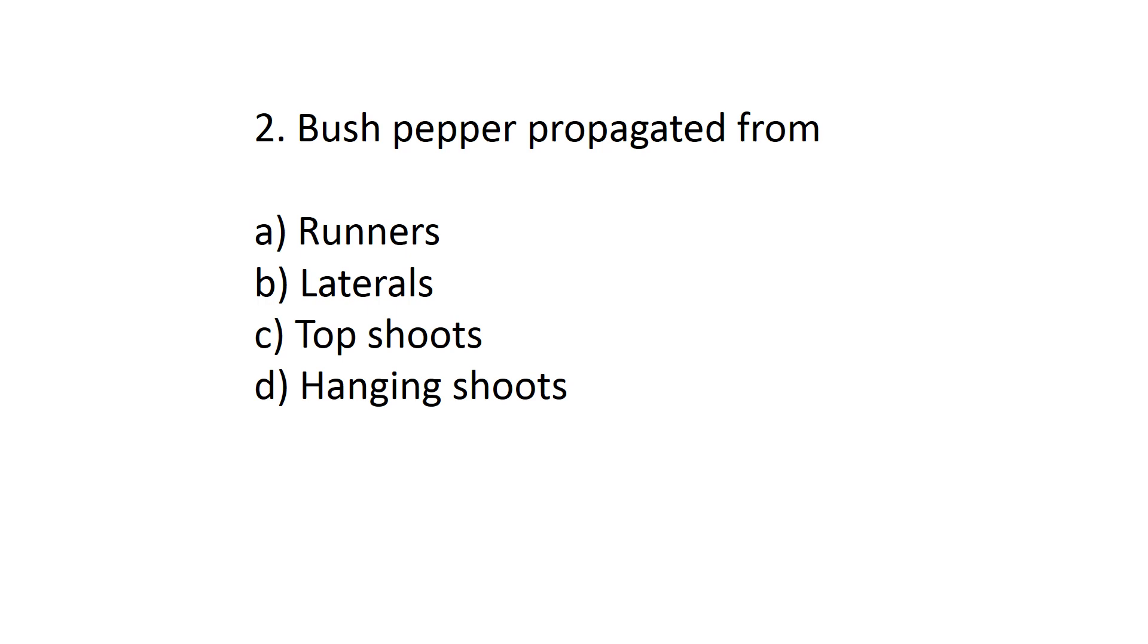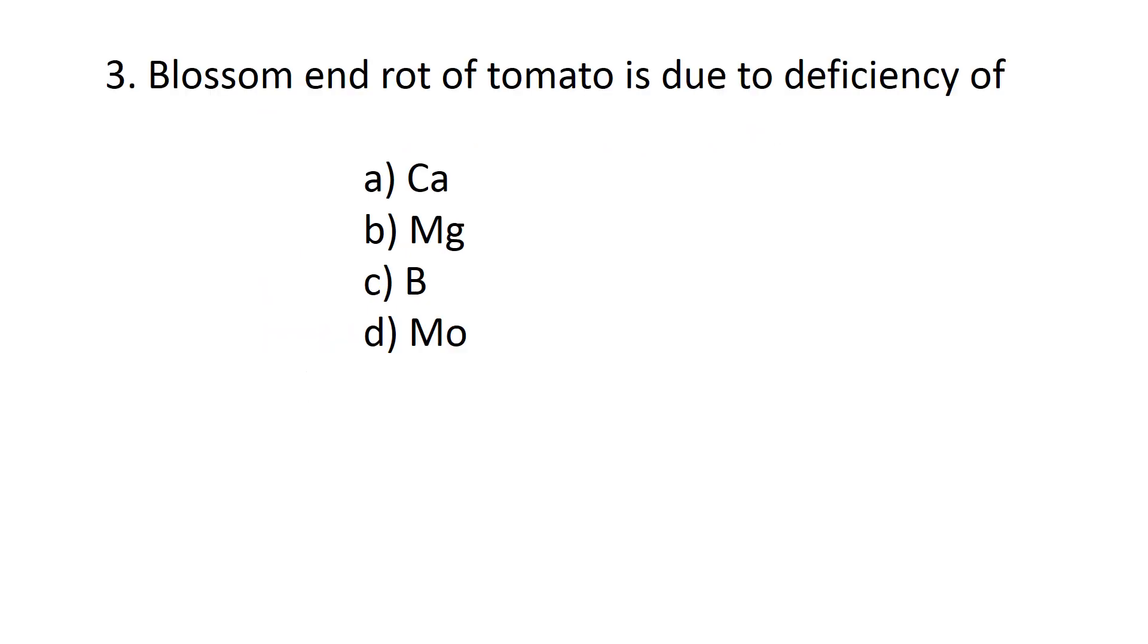Answer is option C, top shoots. Blossom end rot of tomato is due to deficiency of option A: calcium, B: magnesium, C: boron, D: molybdenum. Answer is option A, calcium.